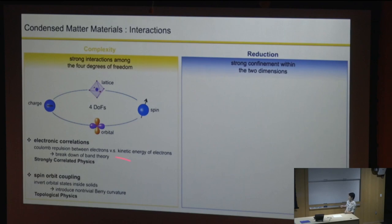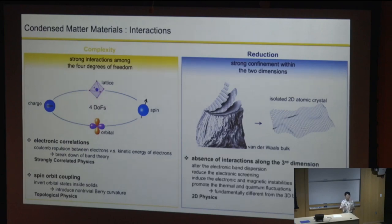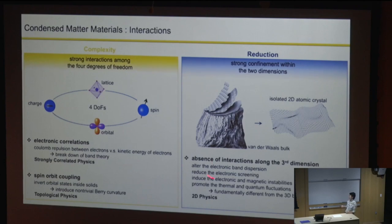Concurrent with topological physics, people also made effort to reduce dimensionality. The beginning of the field was really when people managed to isolate a monolayer of graphite from its bulk counterpart. Graphene tells us that once you remove its neighbors and get it down to the monolayer, the electronic band structure will be very different. This is also realized in transition metal dichalcogenides, where Kyle is an expert.